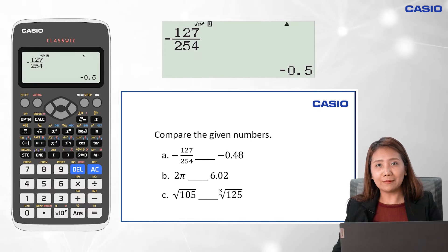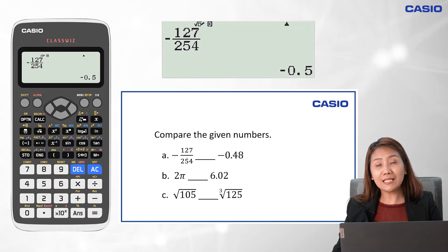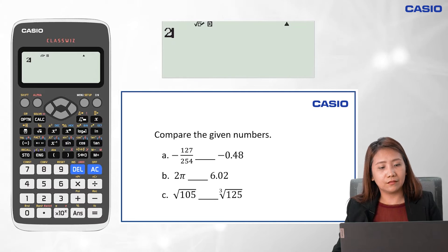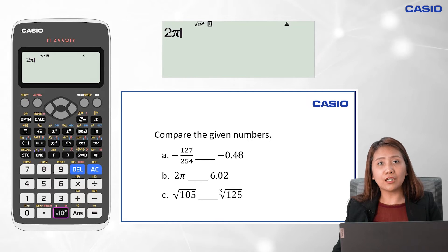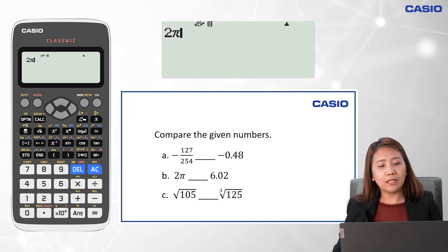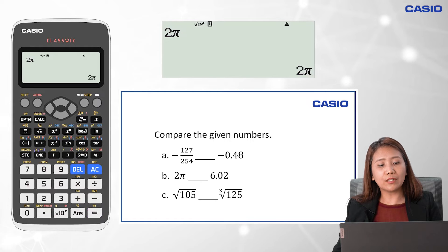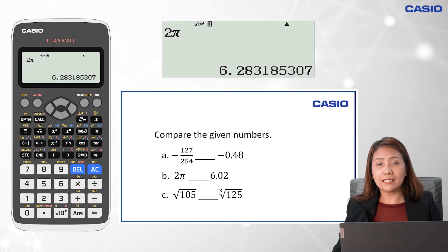Let's go to the second item. This time, let's convert 2π to decimal. We click 2, then shift and the scientific notation key so that π will show, and we click the equal sign. To change the value to decimal, we click on SD, and the value is approximately 6.28.